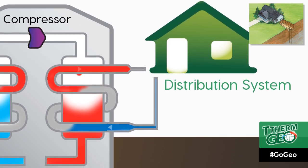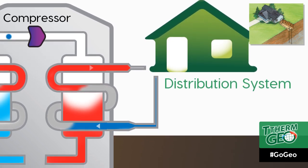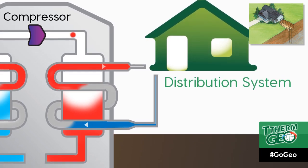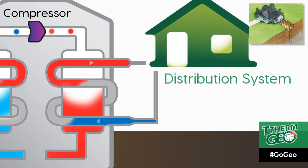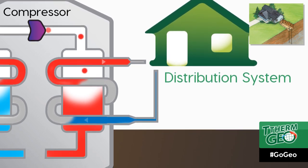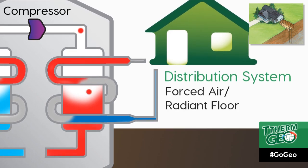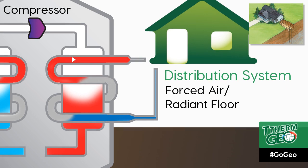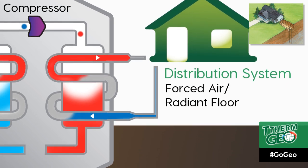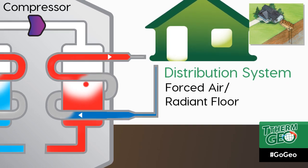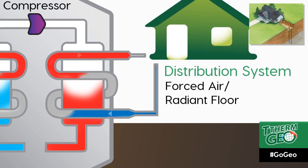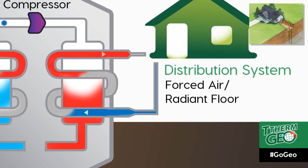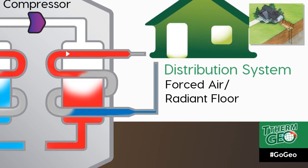With the heat being transferred to the distribution system, it can be moved throughout the building to provide heat all winter long. The distribution system can be done with a traditional forced air delivery system, or a combination of forced air with radiant floor system, whichever the building design calls for to heat the building.